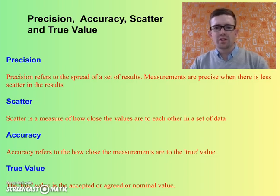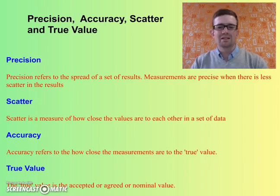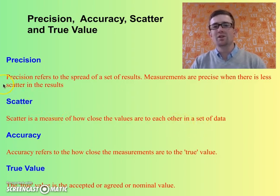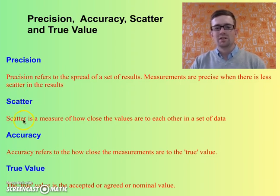Let's look at the definition of some of these terms. Precision refers to the spread of a set of results. Measurements are precise when there is less scatter in the results. Scatter is a measurement of how close the values are to each other in a set of data. If the values are all close together, they are precise; if they're far apart, they're not very precise. Close together means not much scatter, whereas far apart means a lot of scatter.